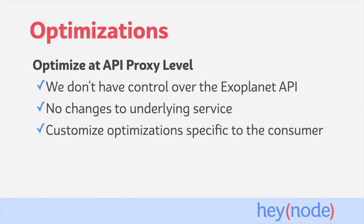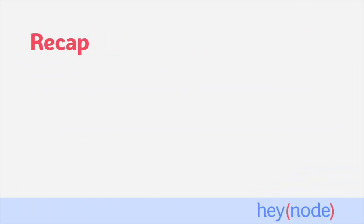This can be very useful if you are dealing with a legacy service or don't want to make permanent changes to the service. And finally, adding optimizations at the API proxy level allows us to customize those optimizations to the consumer that is intended to communicate with the API proxy. We can focus on optimizations that are most useful to the consuming application and implement them at the consumer's point of contact with the underlying service.